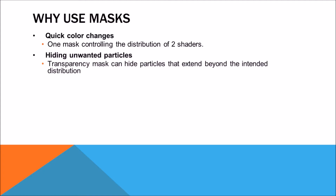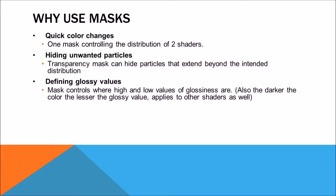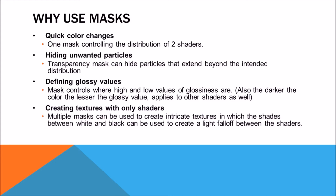Hiding unwanted particles — this is especially true for transparency masks. If you had parts of a particle system that just didn't look right or were in the wrong area and you couldn't get rid of them, you could use a transparency mask to essentially hide them. Defining glossy values — with any shader, mostly diffuse shaders, you can use a mask to define where the glossiness is applied to that mesh. And creating textures with only shaders — we're going to do that in this tutorial, using a mask to break up a simple one-color texture.